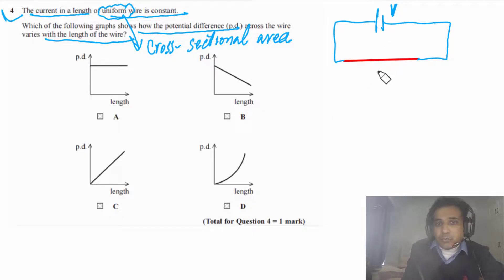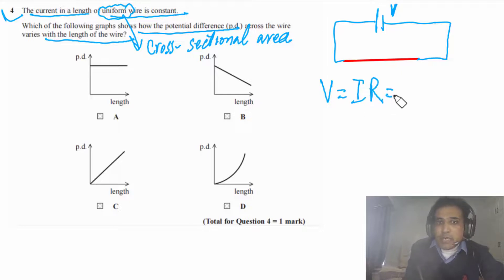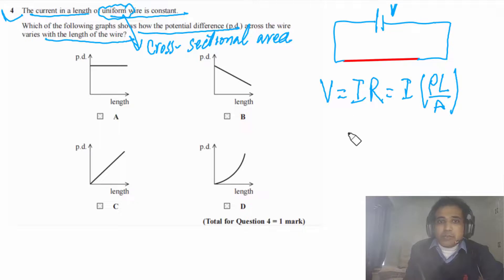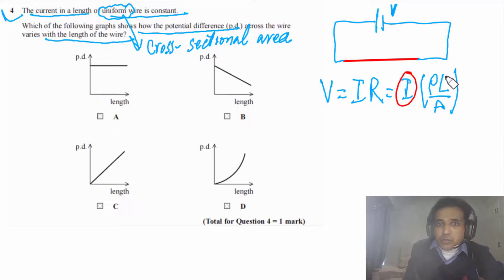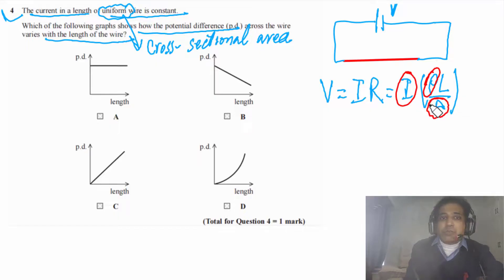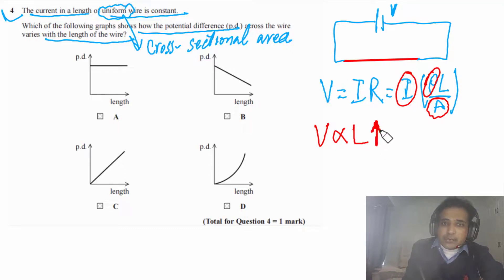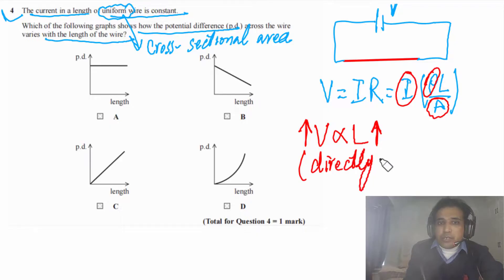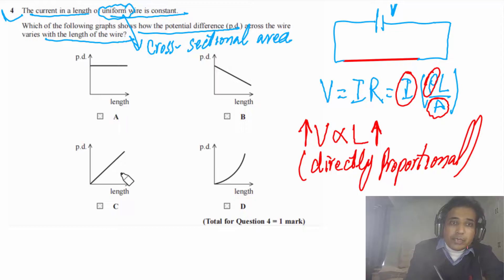The potential difference across the wire is V = IR, and R = ρL/A. Since current I is constant, resistivity ρ is constant, and cross-sectional area A is constant, we can see that V is directly proportional to L. So as L increases, V also increases — these two quantities are directly proportional.